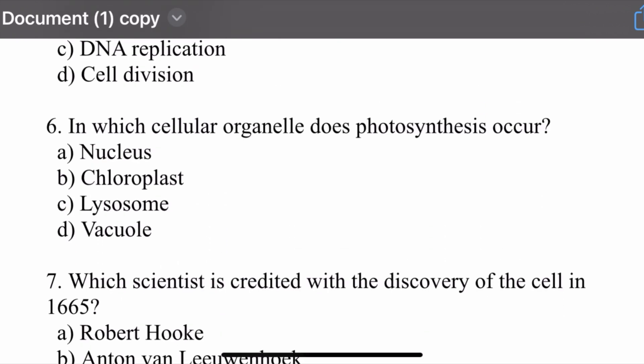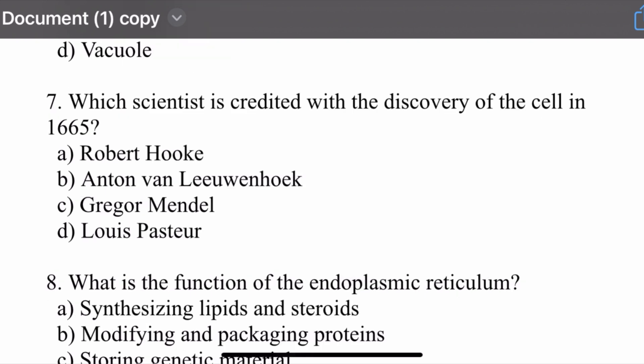Question number six: In which cellular organelle does photosynthesis occur? Options are: nucleus, chloroplast, lysosome, and vacuole. The right option is chloroplast. Photosynthesis occurs in the chloroplast.